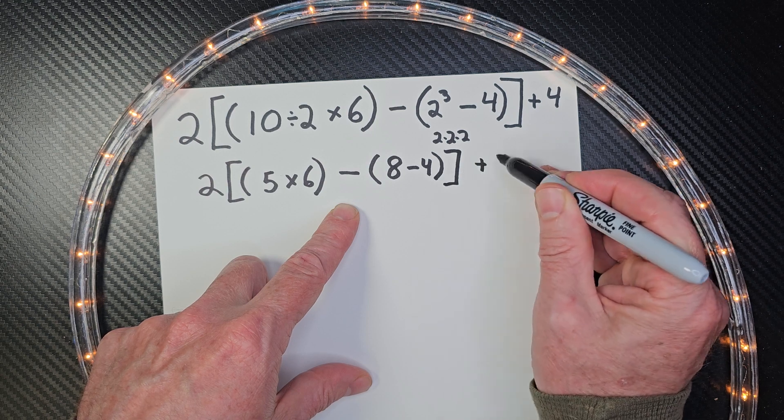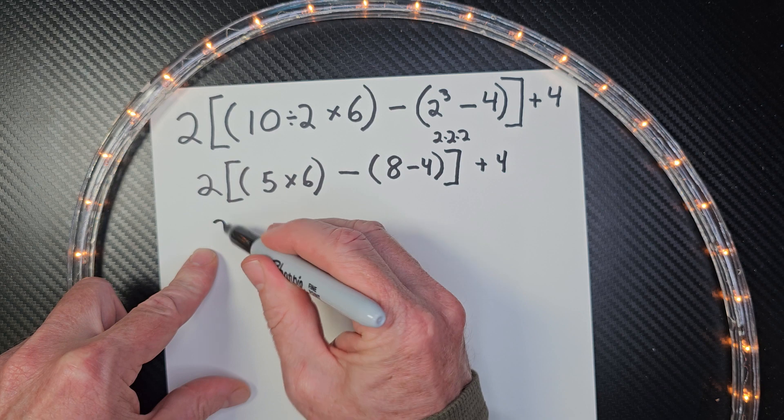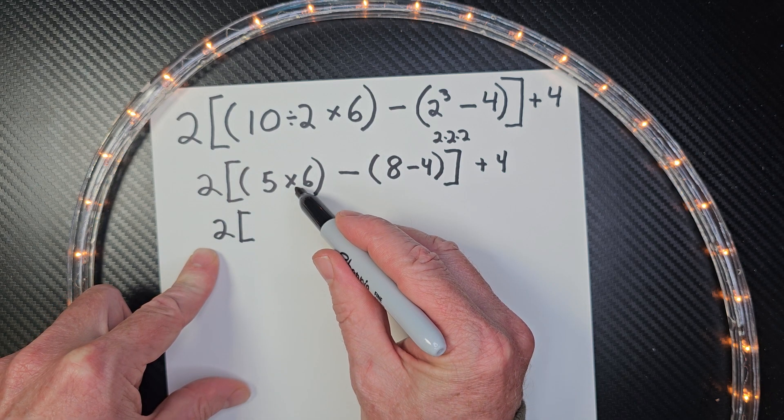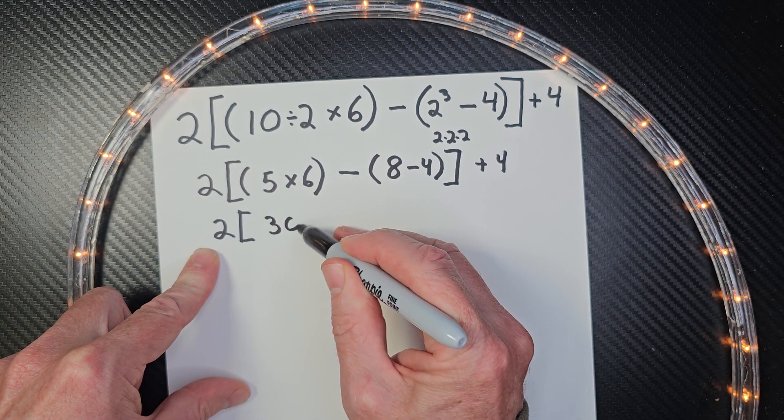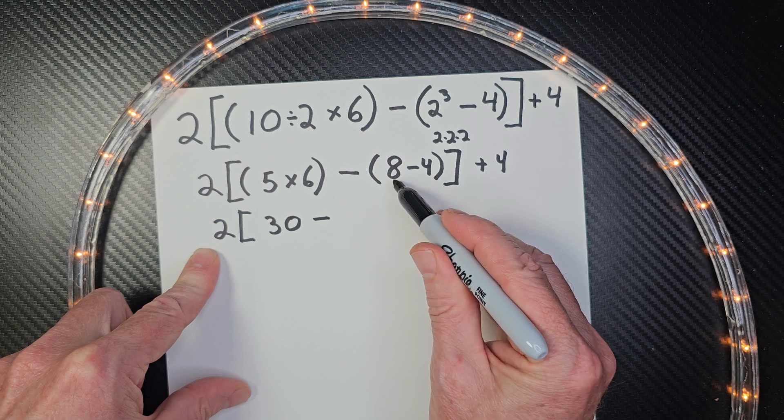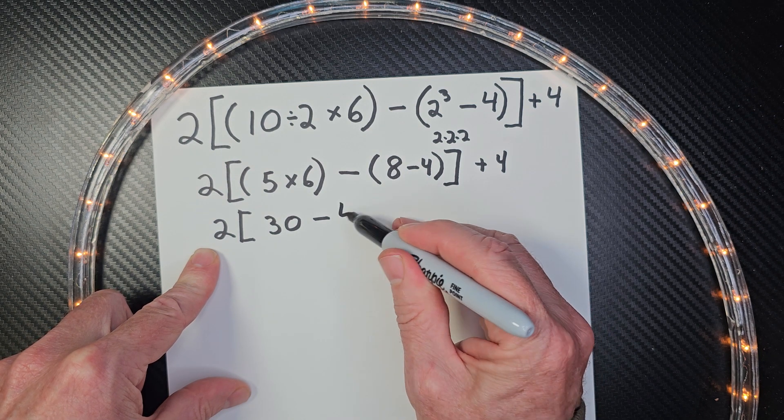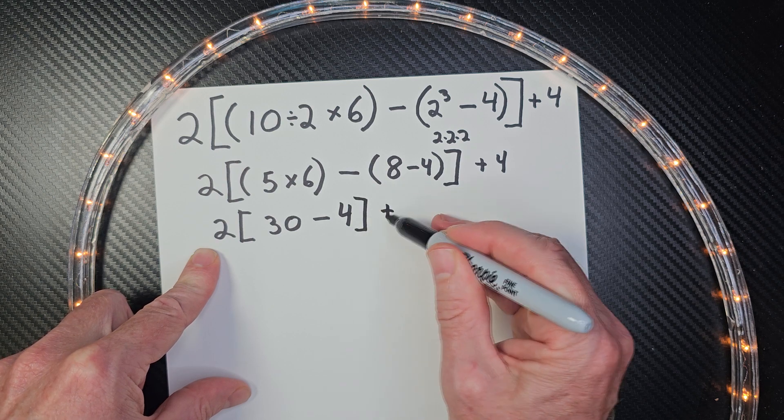And then plus 4. So now I'm going to go ahead and do it all over again to the bracket here. I'm going to finish the inside of the parentheses. 5 times 6 would be 30. Minus 8 minus 4, which would be 4. And then plus 4.